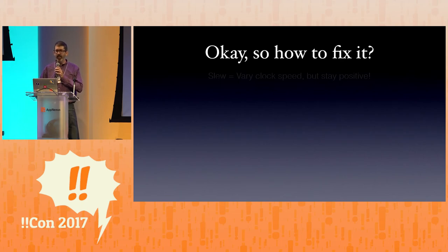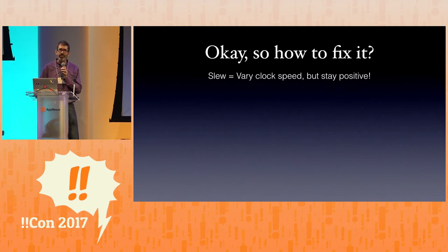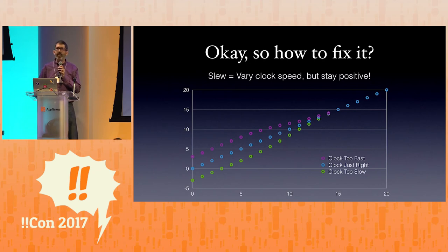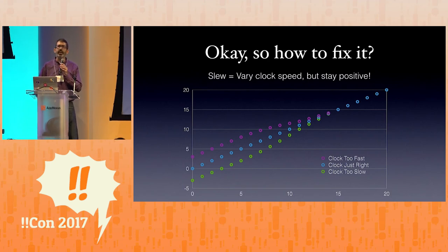So now we have to correct that. How do we fix it? You fix it by slewing your clock — varying your clock speed, but staying positive. If you're on the highway and you're separated from your friends in the other car, you might step on the gas a little harder or lay off of it. You would not go in reverse — it is not recommended. The blue line represents a perfectly accurate clock. The purple line represents my clock running a little bit fast — slewing slows it down until the blue line catches up. The green line: my clock is too slow, so speed it up a little bit until we catch up.